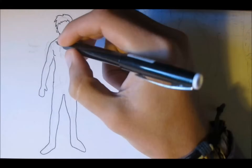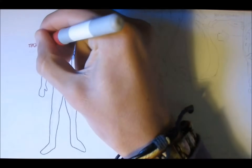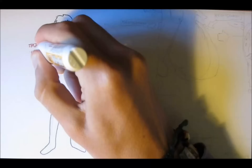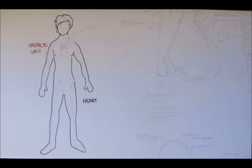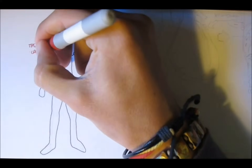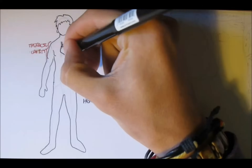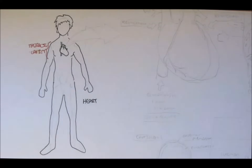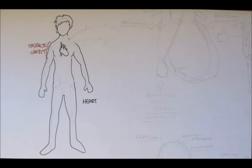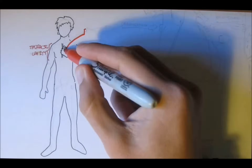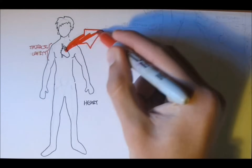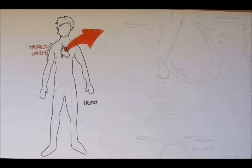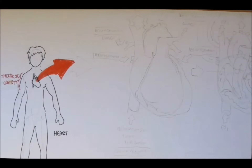Back in the day, the heart was not thought to be the organ responsible for transporting blood around the body, and the cardiovascular system was still a bit of a maze. It wasn't until the mid-1600s when a man by the name of William Harvey described and proved that the heart was responsible for pumping blood around the whole body. The heart is located in the thoracic cavity in our chest.